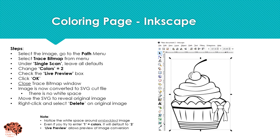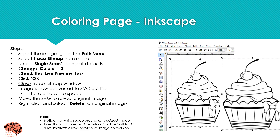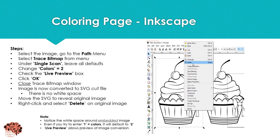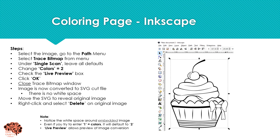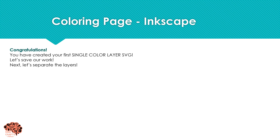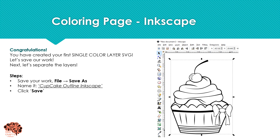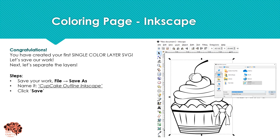There's no longer any white space around our SVG file, so we'll move that over a little bit. It's going to reveal our original picture under there. We'll right click and select Delete on that image. So we've just created a single layer, single color SVG file. We're going to save our work by clicking File and Save As and give it a name.